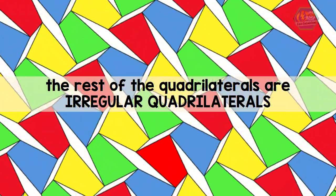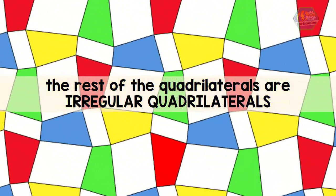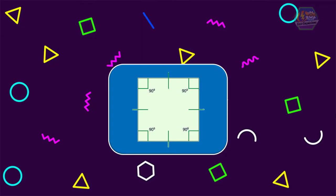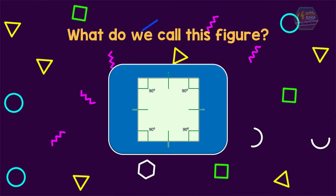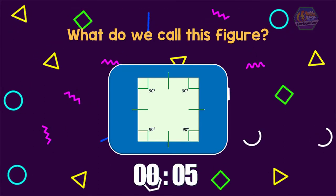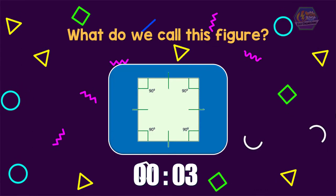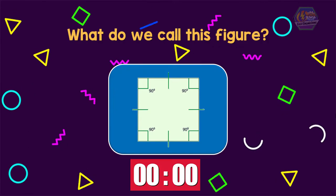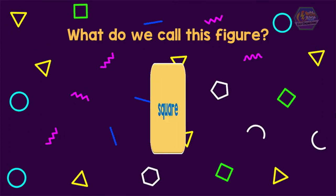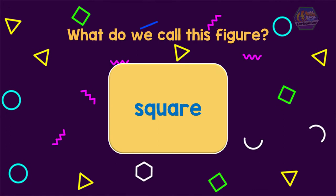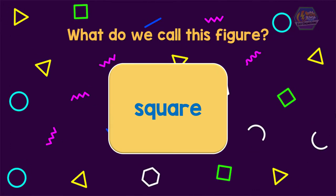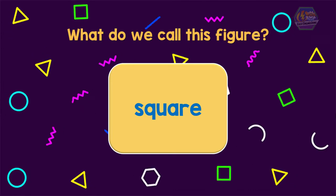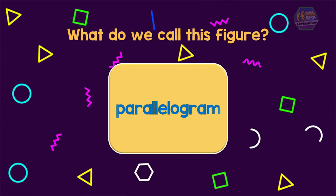Before we end this video, let us have an easy exercise. What do we call this figure? It is a square — a special kind of quadrilateral that has two pairs of parallel sides, so we call it a parallelogram.